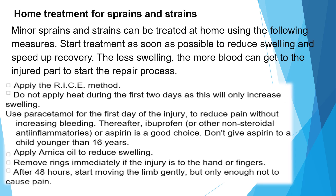Home treatment for sprains and strains: minor sprains and strains can be treated at home. Start treatment as soon as possible to reduce swelling and speed up recovery — the less swelling, the more blood can get to the injured part to start the repair process. Apply the RICE method. Do not apply heat during the first two days as this will only increase swelling. Use paracetamol for the first day to reduce pain without increasing bleeding. Thereafter, ibuprofen or other non-steroidal anti-inflammatories or aspirin is a good choice — don't give aspirin to a child younger than 16 years. Apply arnica oil to reduce swelling, and remove rings immediately if the injury is to the hand or fingers.